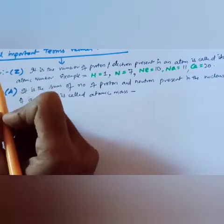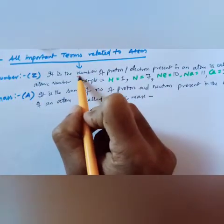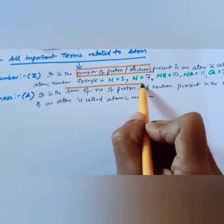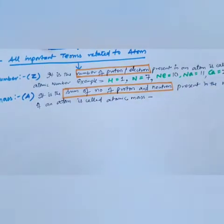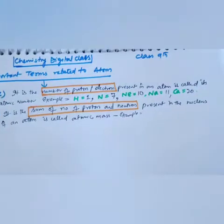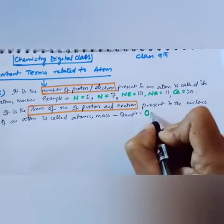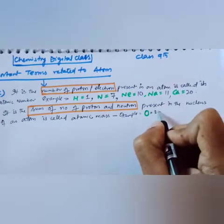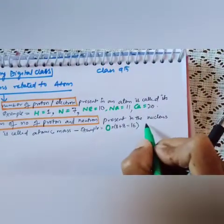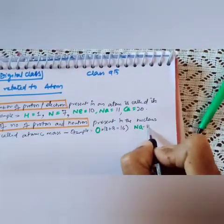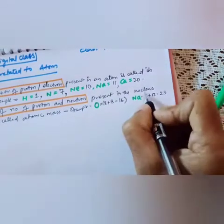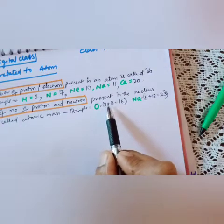To clarify the difference: atomic number is the number of protons or electrons, whereas atomic mass is the sum of protons and neutrons in the nucleus. For example, oxygen has 8 protons and 8 neutrons, so its atomic mass is 16. Sodium has 11 protons and 12 neutrons, giving an atomic mass of 23.